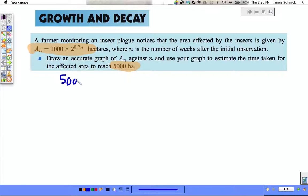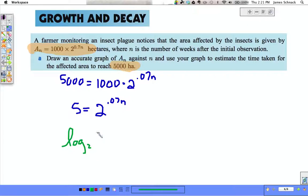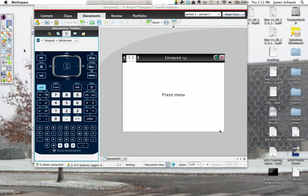We're just going to find when the affected area reaches 5,000 hectares. We do 5,000 equals 1,000 times 2 to the 0.07n. Well, how do we solve something like this? We get the power by itself. Divide both sides by 1,000. And now that we have the power alone, we change it to a logarithm. Log base 2 of 5 equals 0.07n. Divide both sides by 0.07 and we will know n. And let's jump to our graphing calculator to do this.